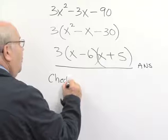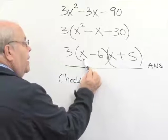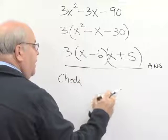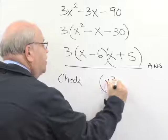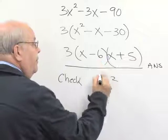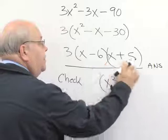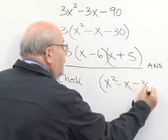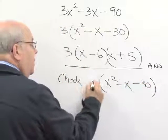Here is our check. We first of all multiply x minus 6 times x plus 5. That gives us x squared minus 6 and 5x would be minus 1x, negative 6 times 5 is negative 30. All of that is multiplied by 3.